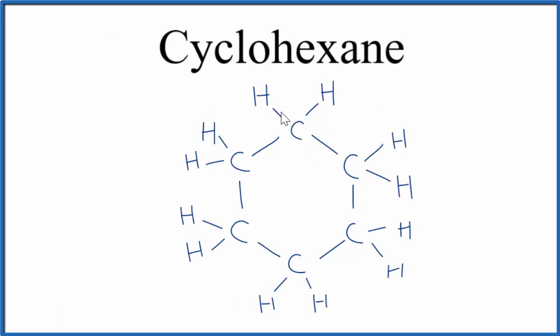So this is the structure for cyclohexane. If you count the carbons up, we know we have six. If you count the hydrogens up, we'll have twelve. So the molecular formula is C6H12.